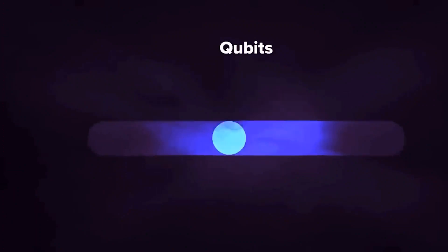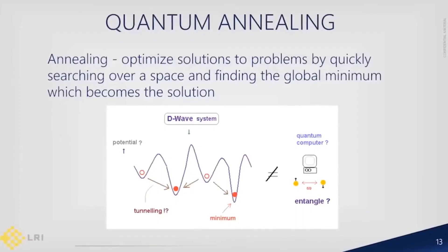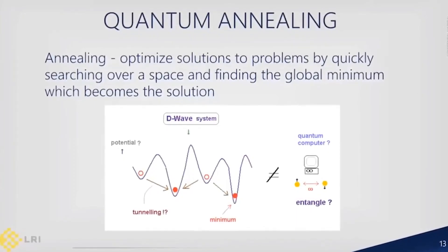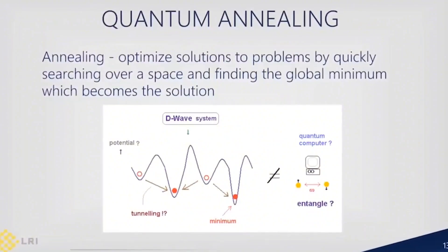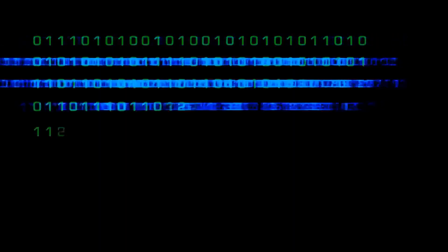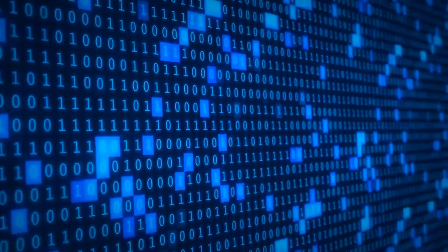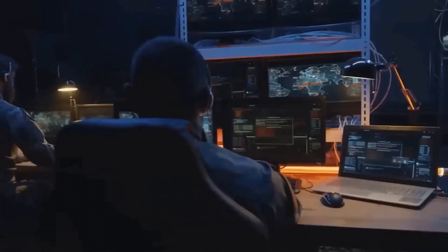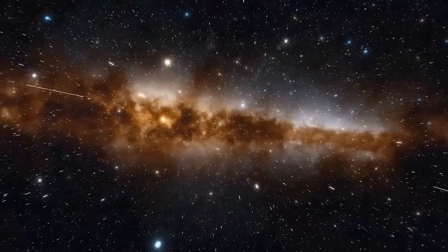In the quantum field, qubits, which are short for quantum bits, serve as the fundamental building blocks of quantum computers. Unlike classical bits, which exist in a state of either 0 or 1, qubits harness the power of superposition. This means that they can exist in multiple states simultaneously, allowing quantum computers to perform a multitude of operations at once.